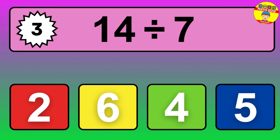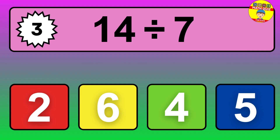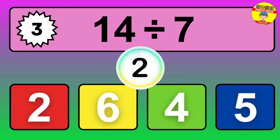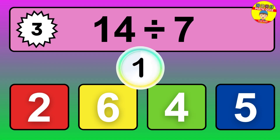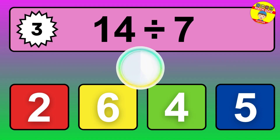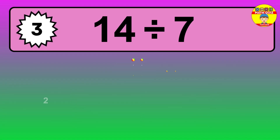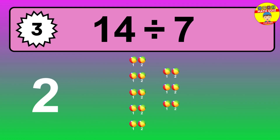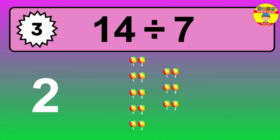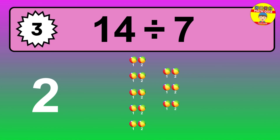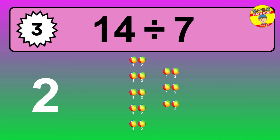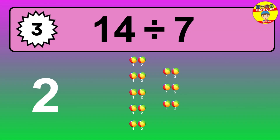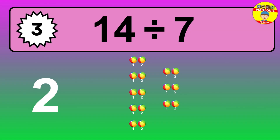14 divided by 7 — time to think. Let's go to the solution. Divide the number 14 by 7. Each group contains 7 units, so dividing 14 by 7 results in 2 equal groups. Thus, the result is 14 divided by 7 equals 2.